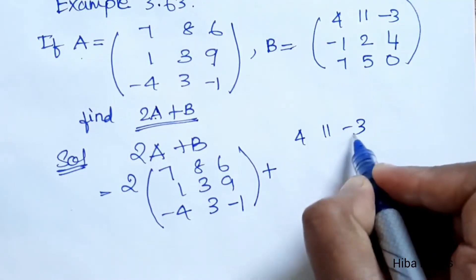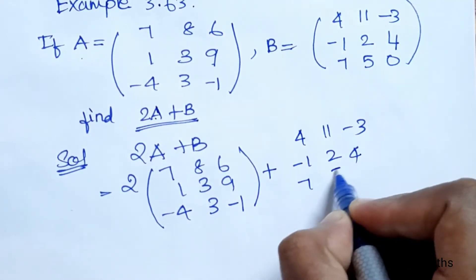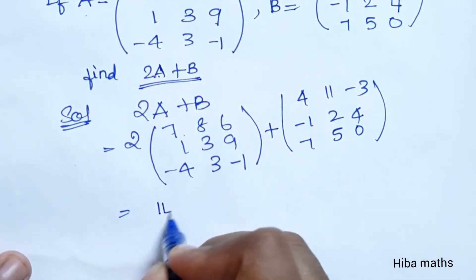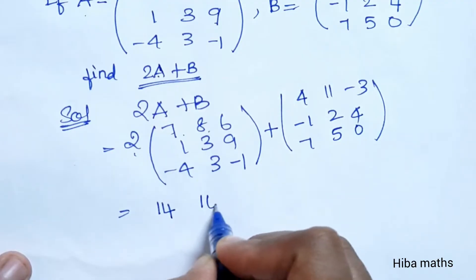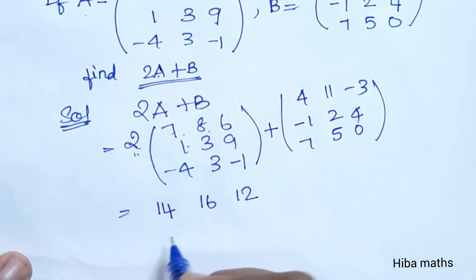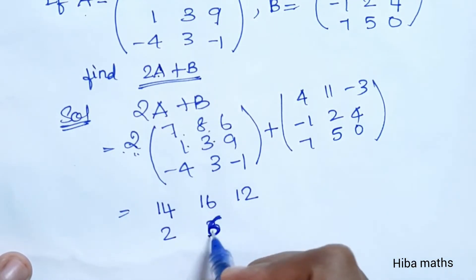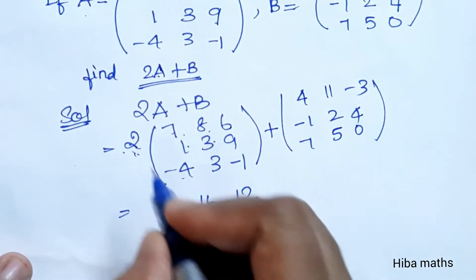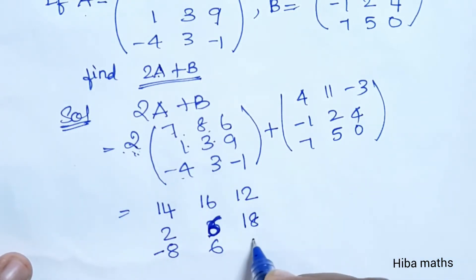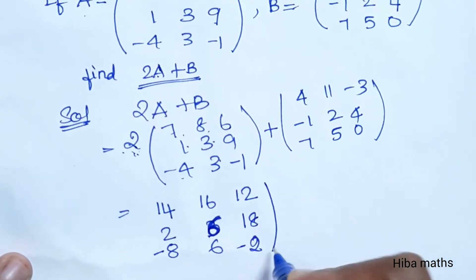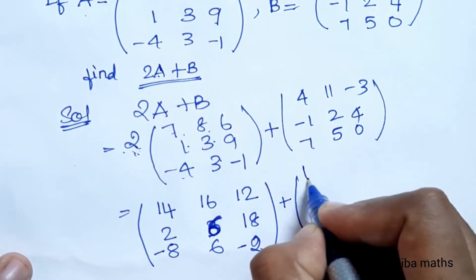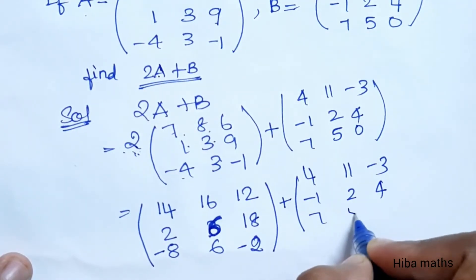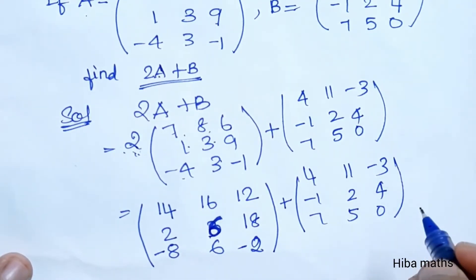Computing 2A by multiplying each element by 2: 2×7=14, 2×8=16, 2×6=12, 2×1=2, 2×3=6, 2×9=18, 2×4=8 so -8, 2×3=6, 2×1=2 so -2. So 2A = [14,16,12,2,6,18,-8,6,-2]. Then plus B matrix: [4,1,1,-3,-1,2,4,7,5,0].